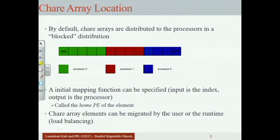We sometimes use the term 'home processor.' Each chare array element has a home processor, which is where the initial mapping places it. The initial mapping is typically done using a simple function like the block mapping, so that it doesn't need much data to calculate — you just say: my element number is i, there are 1000 elements, there are 12 processors, therefore this element belongs on that processor by a simple integer operation.